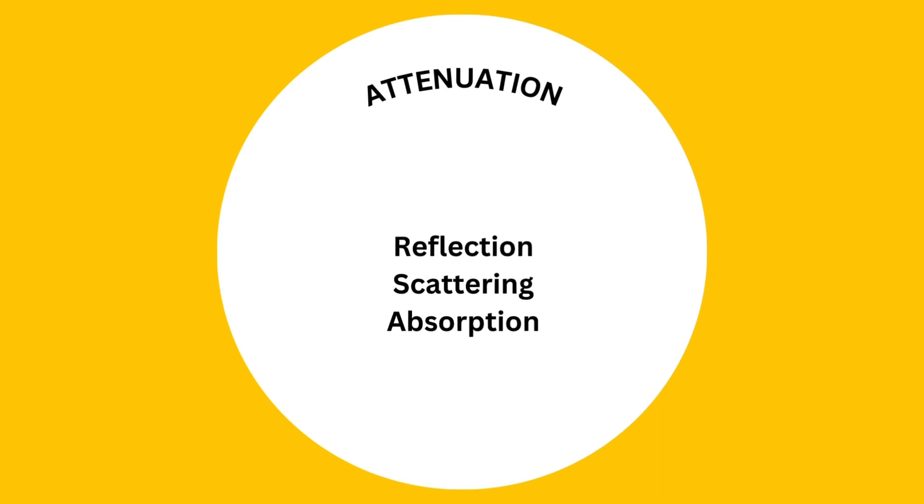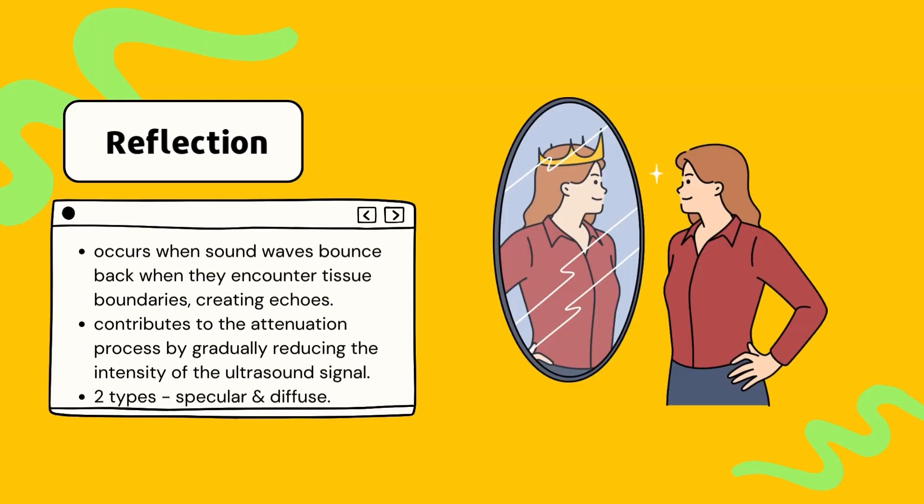As we explore the concept of attenuation in ultrasound imaging, we need to understand the three processes that contribute to this phenomenon: reflection, scattering and absorption. Let's begin with reflection. Reflection occurs when sound waves strike a boundary and some of its energy is reflected back through the ultrasound system.